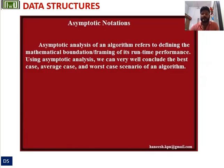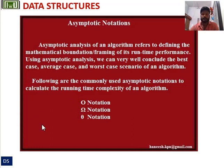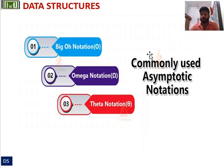Now we are moving to asymptotic notations. Asymptotic analysis of an algorithm refers to defining the mathematical foundation of its runtime performance. Using asymptotic analysis, we can very well conclude the best case, average case, and worst case scenario of an algorithm. The commonly used asymptotic notations to calculate the running time complexity of an algorithm are: Big O notation, Omega notation, and Theta notation.